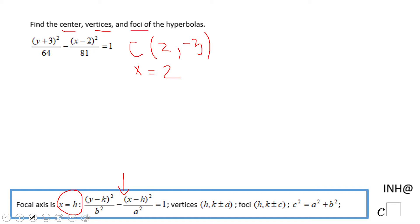Then we're going to need to use b squared. b squared is 64, which tells us b will be plus or minus the square root of 64, which is plus or minus 8.